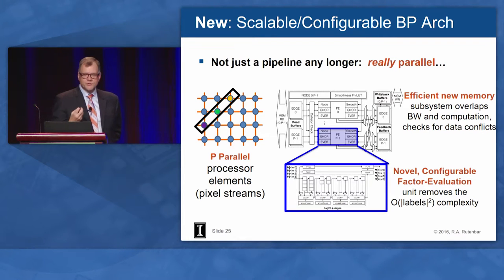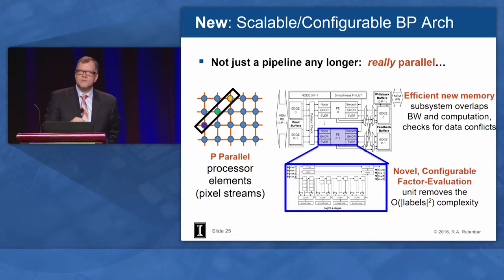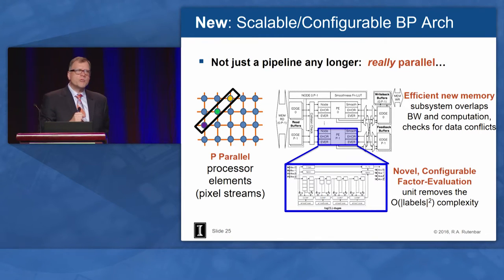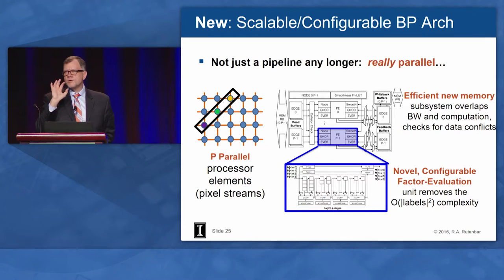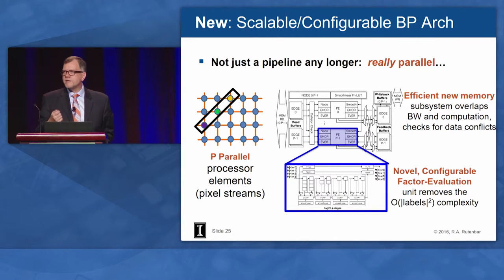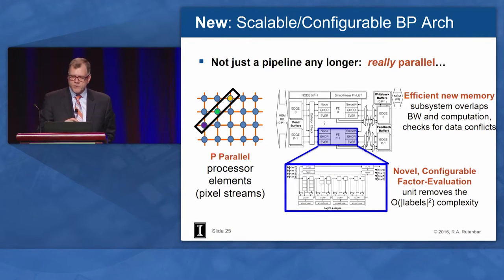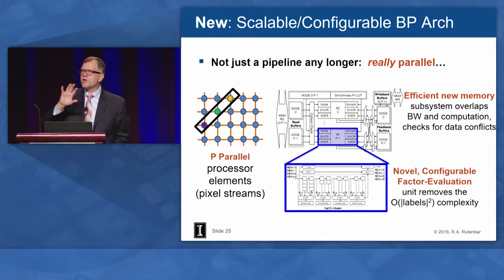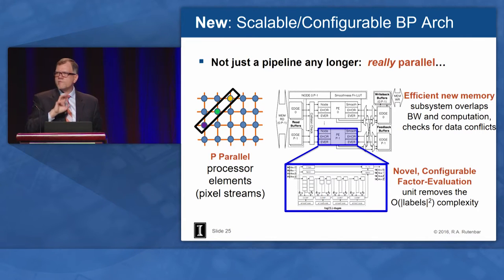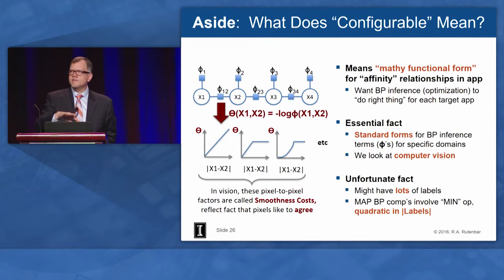Our version two architecture is still doing belief propagation in an iterative manner, but it's a scalable and configurable architecture. It's not just a pipeline anymore — it's actually processors. We're still deploying processors scheduled to run the diagonal, but we can now throw more processors at this thing, and more processors means more speed. It also has a new memory subsystem grabbing things in more intelligently scheduled chunks. Because it's separate processors rather than a pipeline, computations can interfere with each other and it manages all the hazards automatically in a reasonably smart way. There's also an interesting configurable unit that can manage all of those affinities — those phi and theta things — with a way of configuring it to do more than one problem.